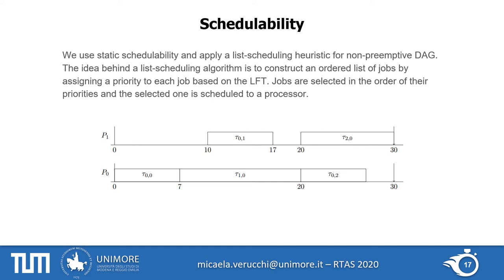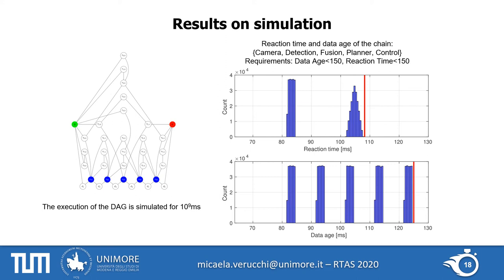For schedulability, we apply the list scheduling heuristic for non-preemptive DAGs. The jobs are ordered by their latest finishing time and dispatched on the available cores only when the current time is greater than the earliest starting time and all predecessors are completed. This approach allows us both to check schedulability and to build a schedule.